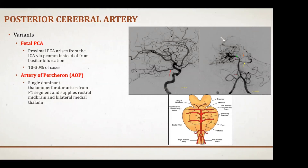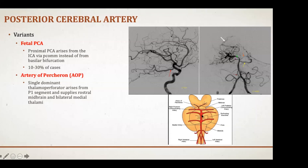The fetal PCA is seen in about 10 to 30 percent of cases. The other important variant is the artery of Percheron — a single dominant thalamoperforator artery arising from the P1 segment that supplies the rostral midbrain and bilateral medial thalami. On this image you can see the basilar artery, the pontine perforators, and the posterior cerebral arteries at the top.